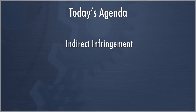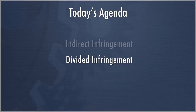The agenda for this lecture is to first discuss the concept of indirect infringement and the rules of contributory and inducement infringement, both of which are versions of indirect infringement. Then we're going to talk about Divided Infringement. The basic rule here is that a single entity must infringe each and every element of a patent claim, which has particular relevance to method claims and interacts with indirect infringement in an interesting way.